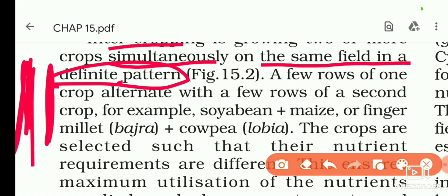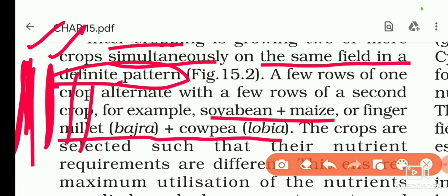These two rows are of the same crop, and the next two rows will be of a different crop. In this way, the intercropping system is used. For example, soybean plus maize, and bajra plus lobia. We can grow crops in the intercropping system.